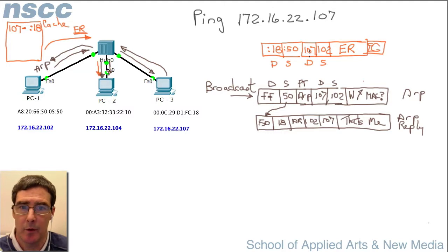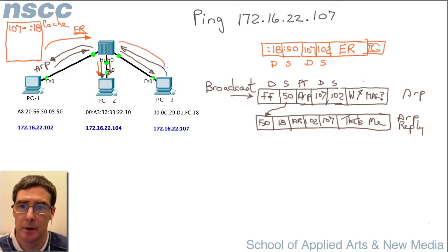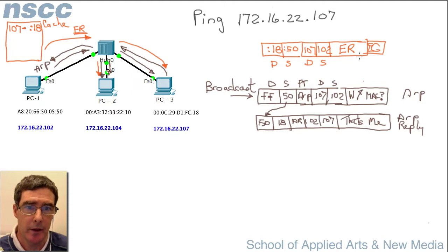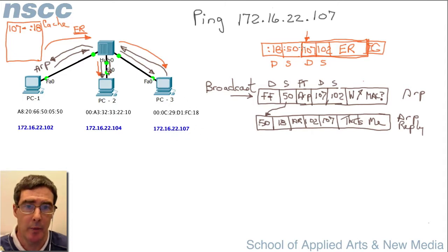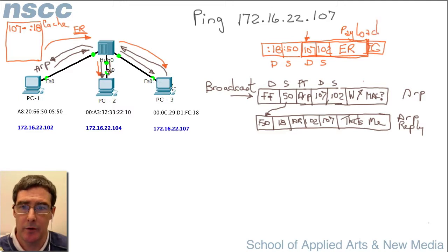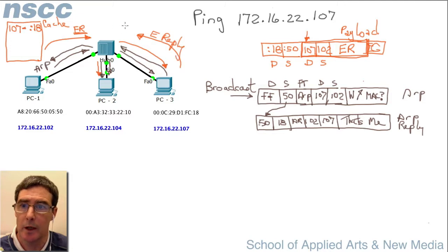The frame comes down to PC2 first, but the destination address is .18, which is not PC2's MAC address, so it's ignored. It goes down to PC3. PC3 sees the destination address .18 — that's me — so it processes it. It takes the packet out of the frame, processes it further, looks at the destination IP address .107, which matches, and finds the echo request payload. PC3 then constructs a frame with an echo reply and sends it back to PC1.